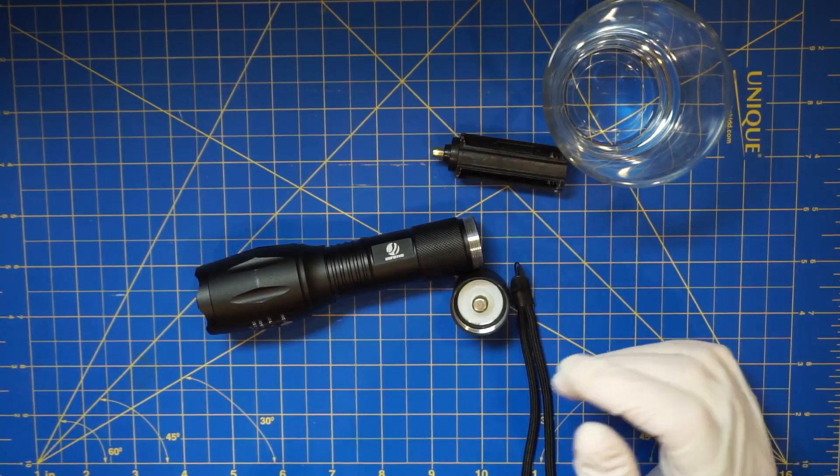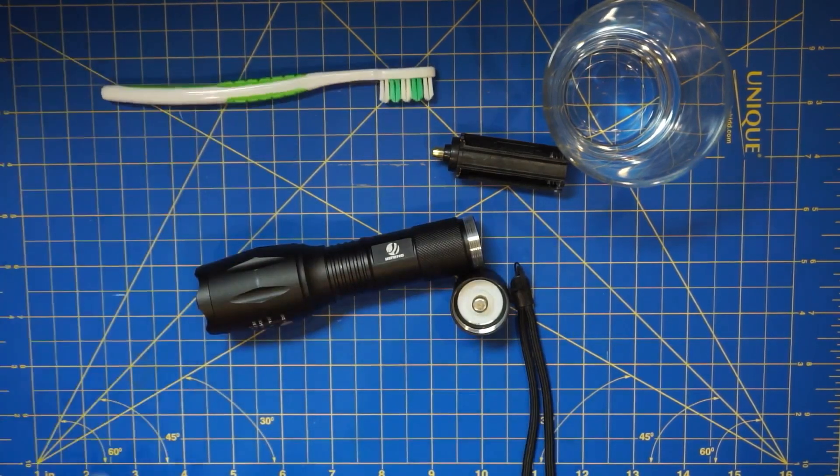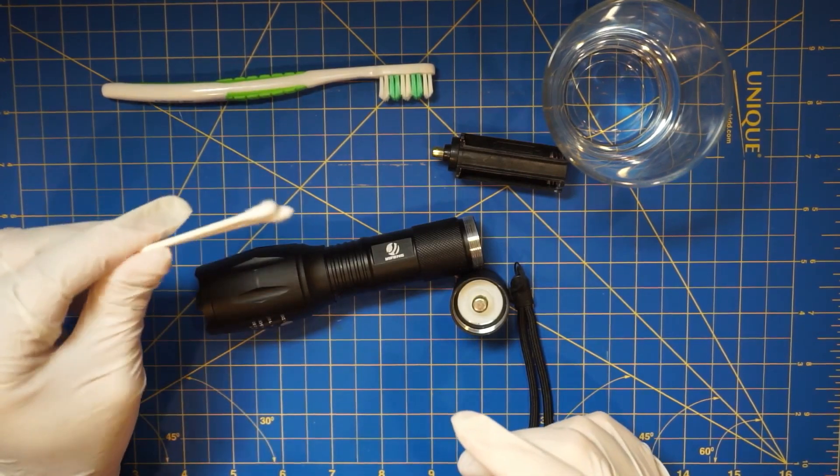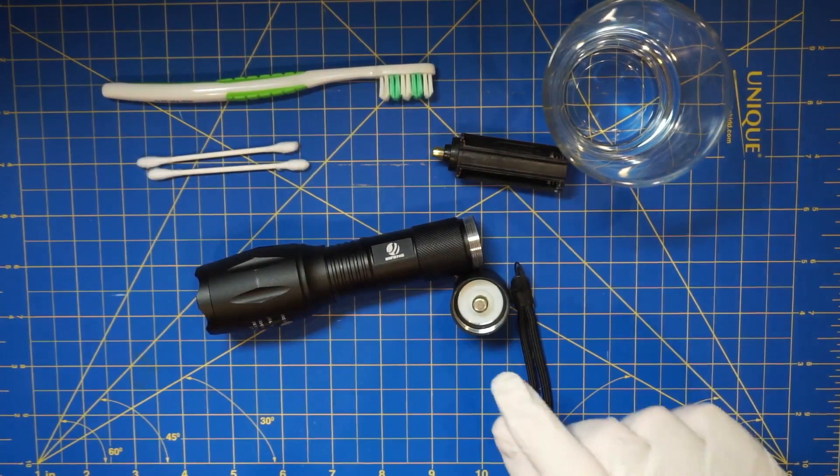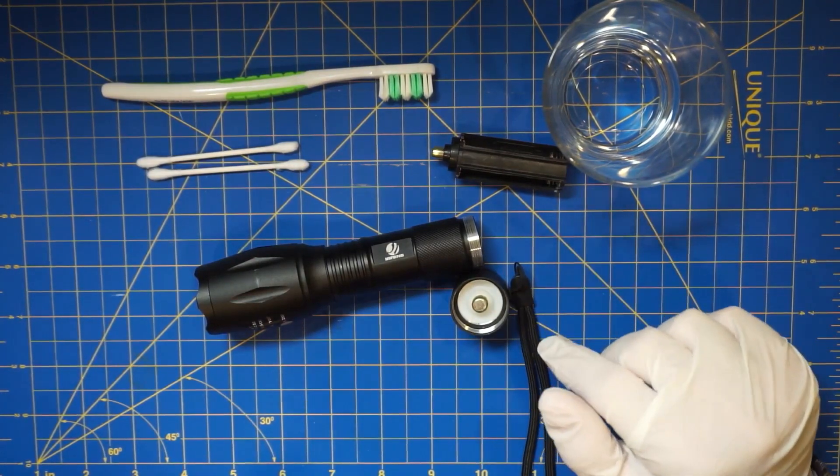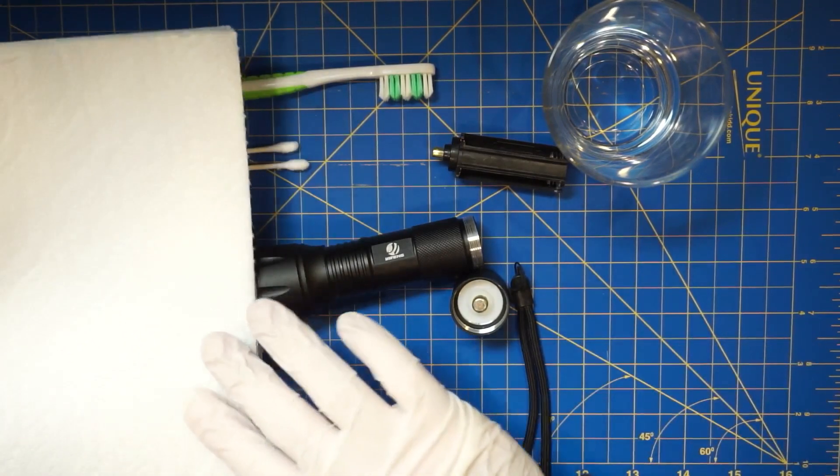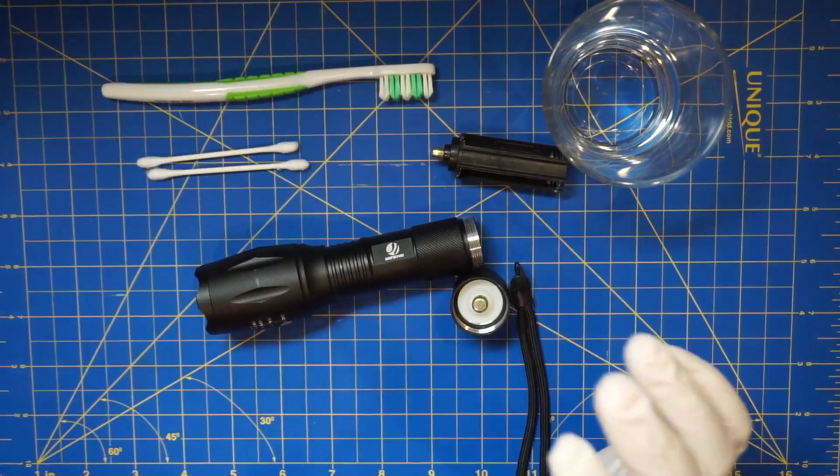I'm going to use a toothbrush, and because it's quite small, I brought two cotton swabs in case I need to rub vinegar in there to clean the terminals. At the end, I'm just going to dry everything with paper towels.